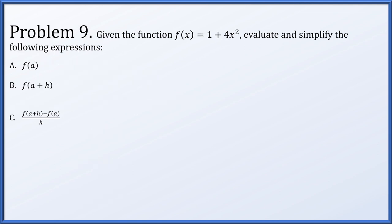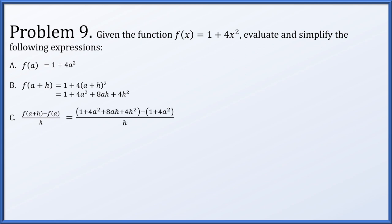For problem 9, given f(x) = 1 + 4x², evaluate f(a), f(a+h), and [f(a+h) - f(a)] / h. f(a) = 1 + 4a². f(a+h) = 1 + 4(a+h)², which expands to 1 + 4a² + 8ah + 4h². For part c, the 1s and 4a² terms cancel, leaving (8ah + 4h²) / h. Factoring h from the numerator and canceling gives 8a + 4h, provided h ≠ 0.